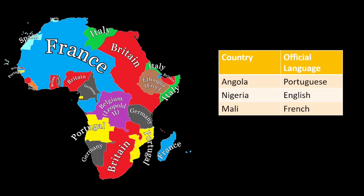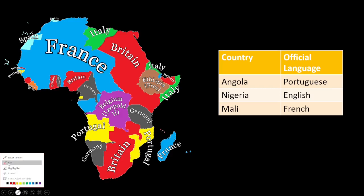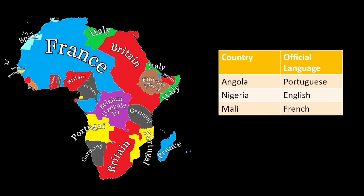Different countries in Africa today have official languages that are the official languages of many European countries. In Angola, which is about right here where the yellow is, the official language is Portuguese. We can see Portugal colonized there, so Portugal's cultural influence has diffused to Africa and made Portuguese one of the official languages of Angola. Nigeria, which is about right here in blue and red in Western Africa, has an official language of English — Britain colonized Nigeria historically because of the Berlin Conference. And then Mali, in the blue here for France in West Africa, was colonized by the French, and their official language is French.